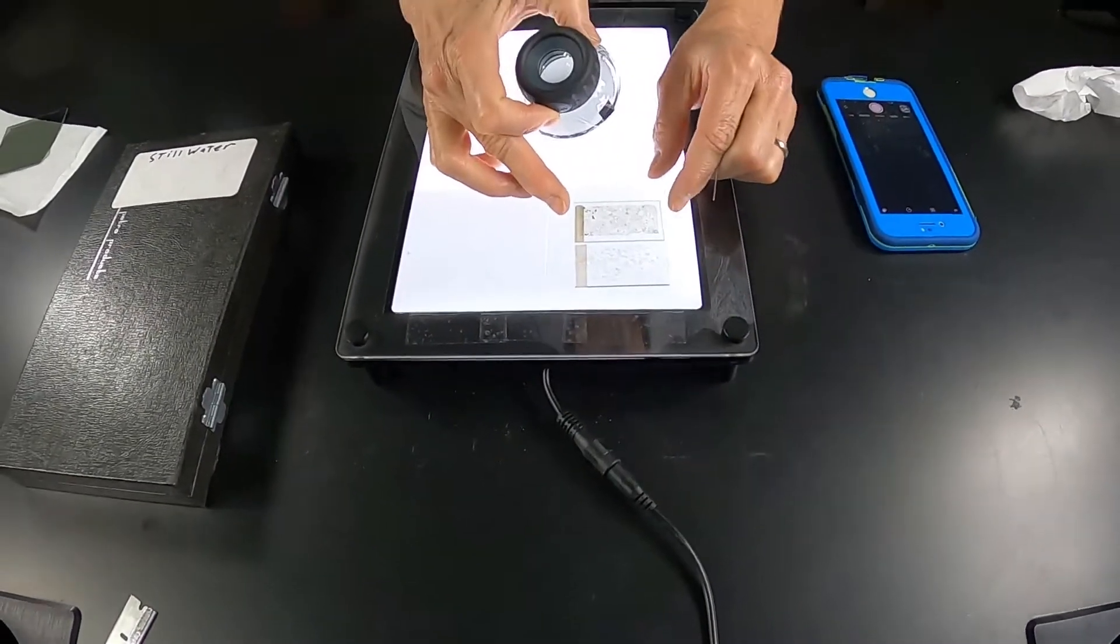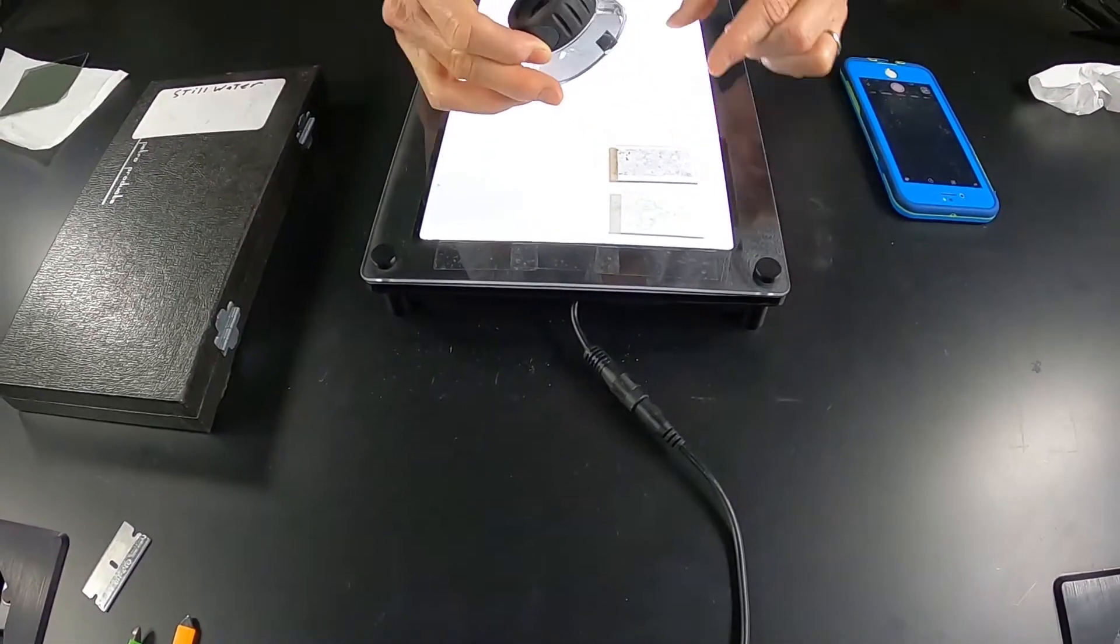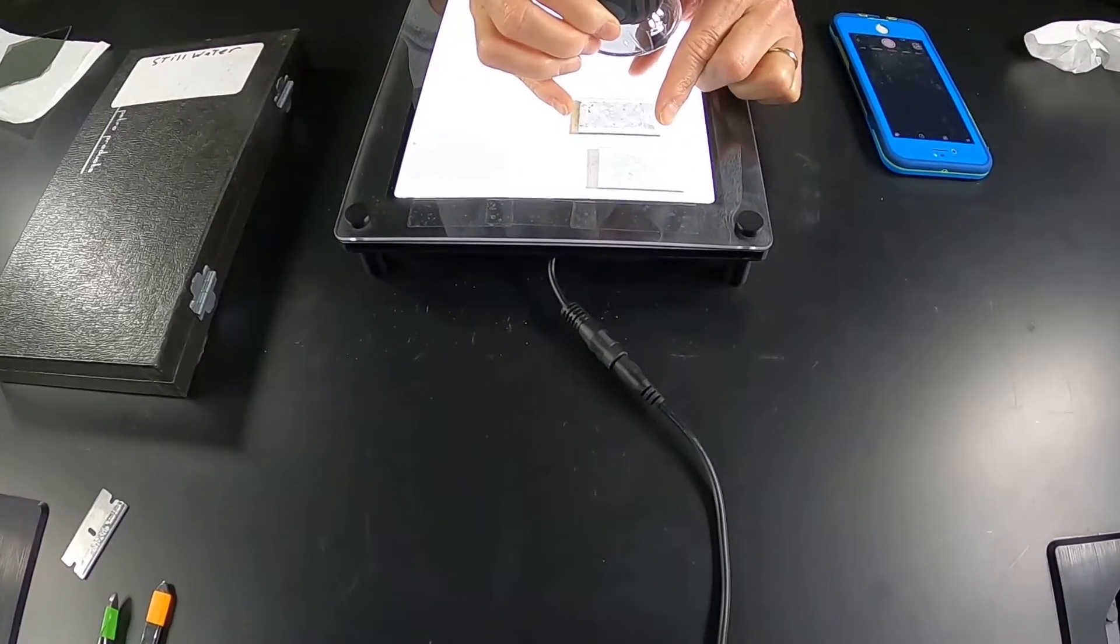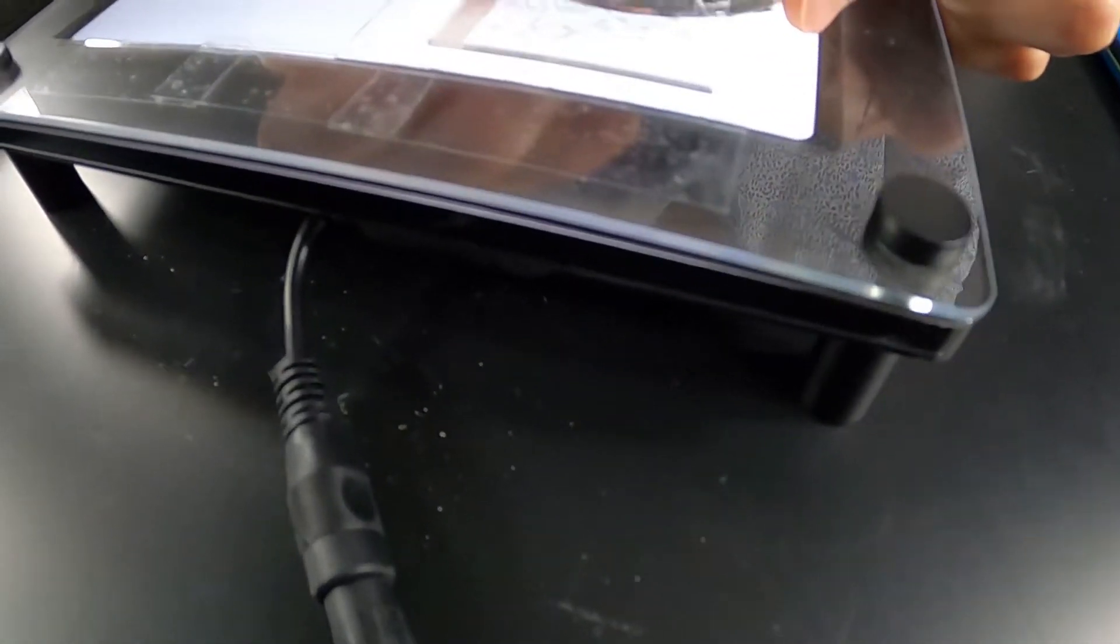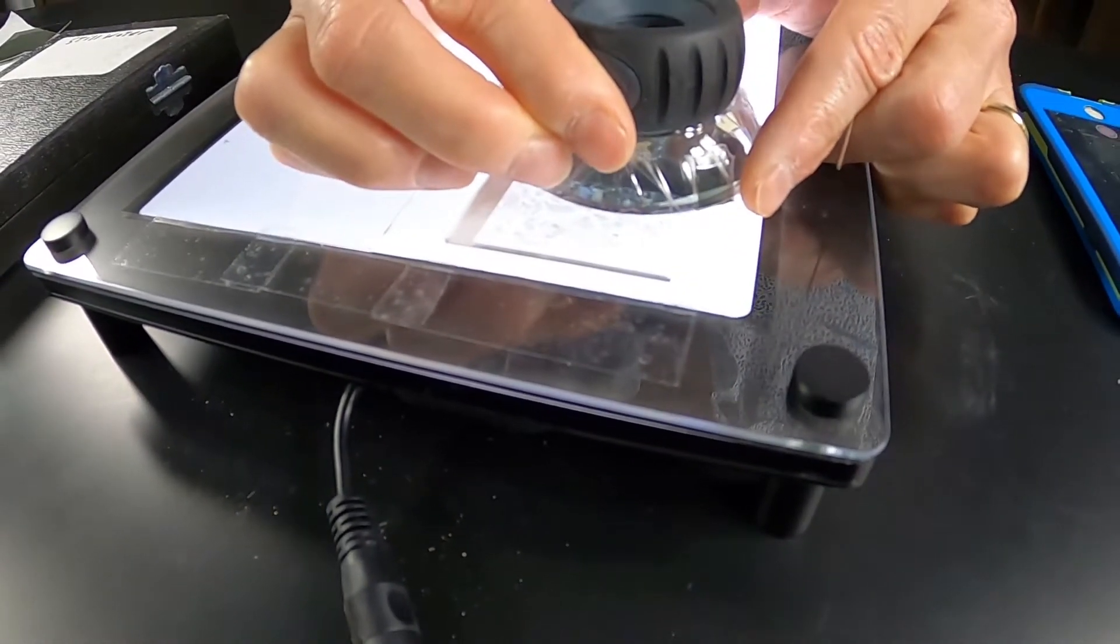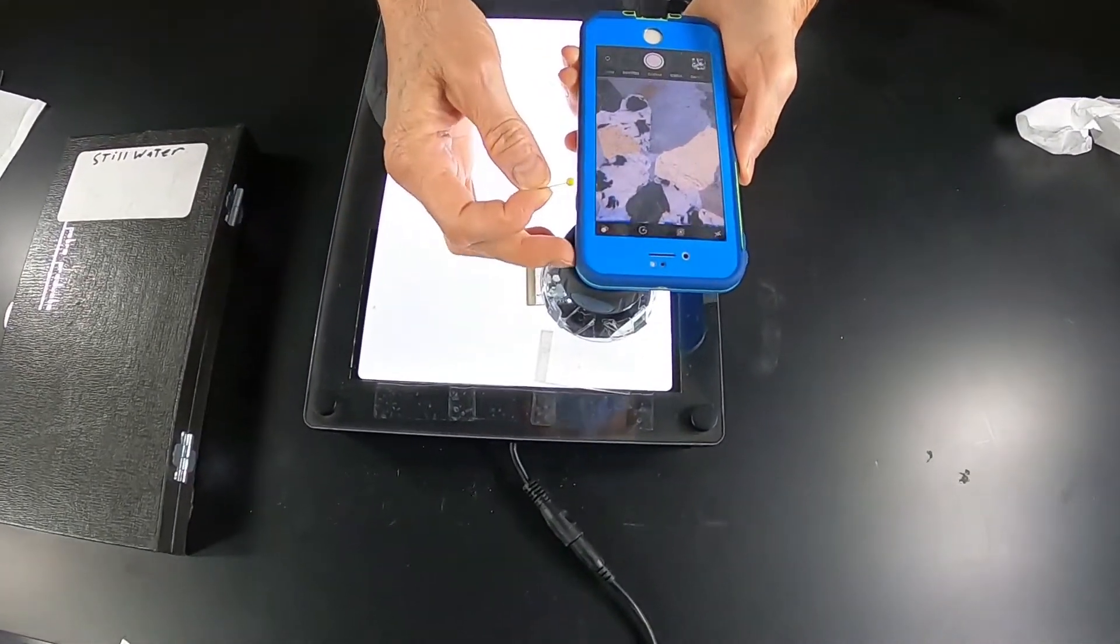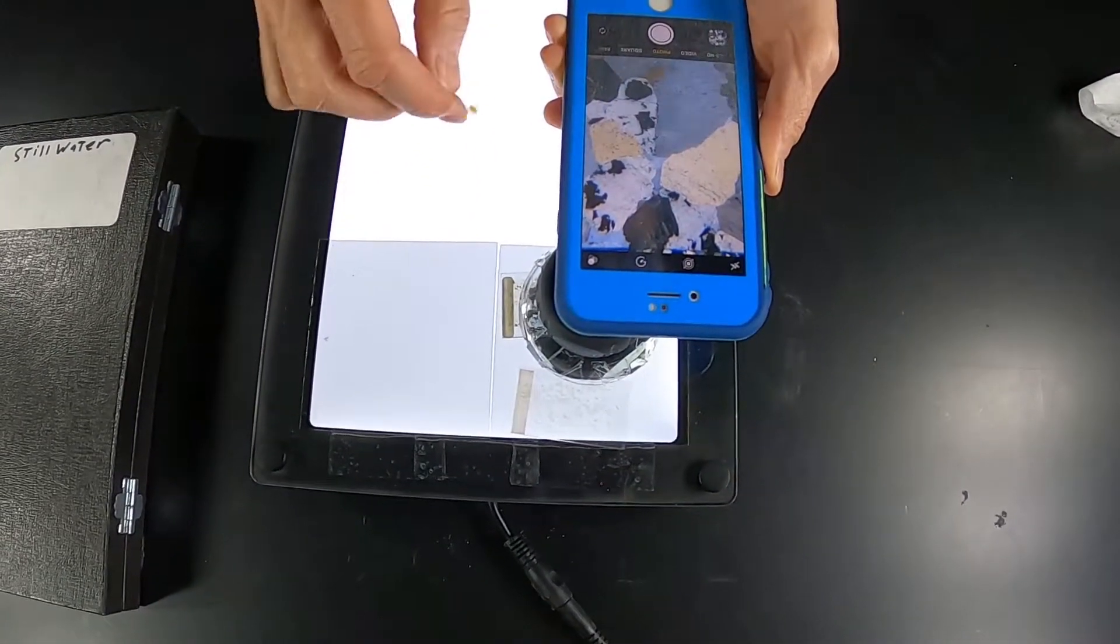So now we're going to look at the same sample that showed the slight pleochroism, but we're going to look at it in cross polarized light. I now have my sample in cross polarized light. This is the sample that showed the faint pleochroism.